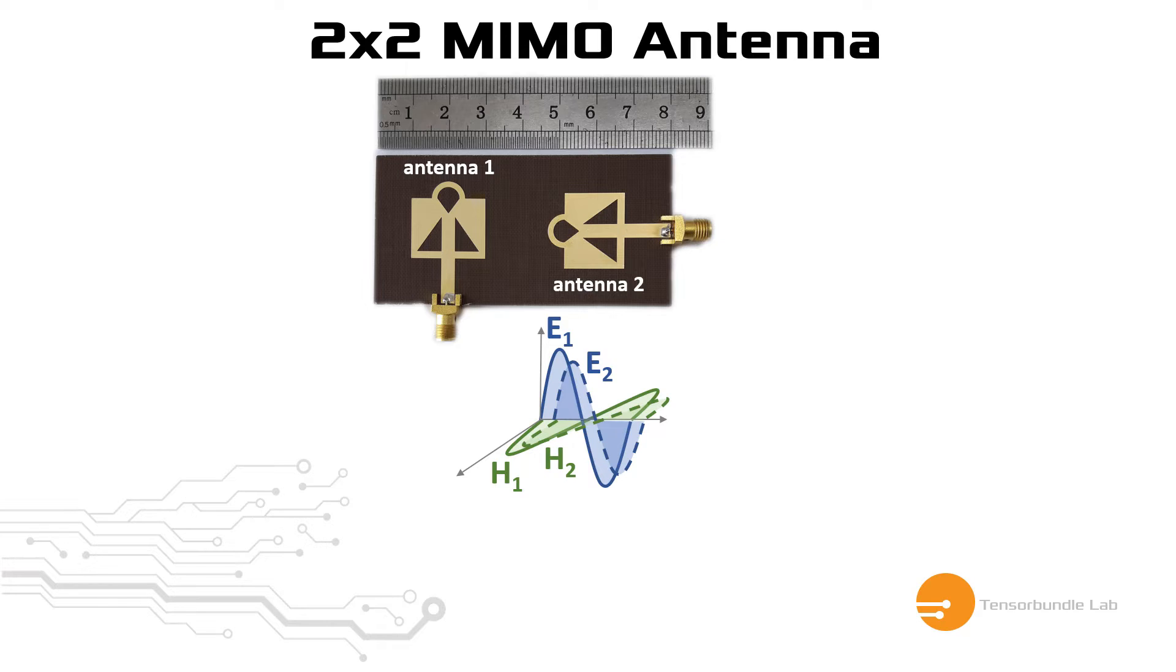Mutual coupling is quantified by the S21 parameter, which is the transmission parameter. It's identical to S12 because it's a reciprocal system, so it doesn't matter whether you quantify in terms of S21 or S12, both are equal.